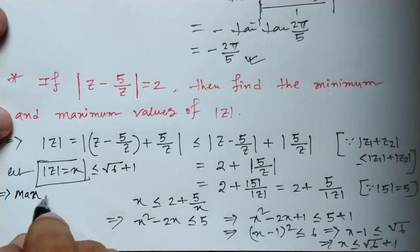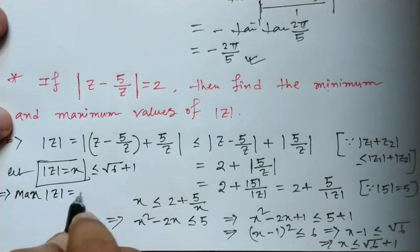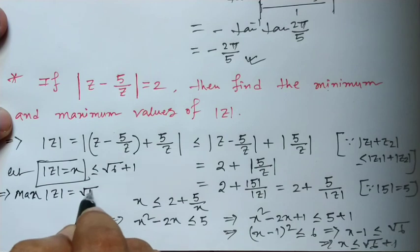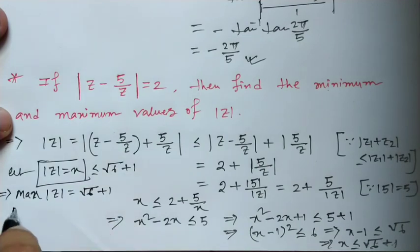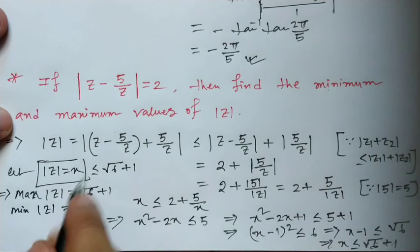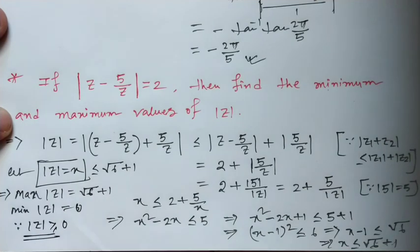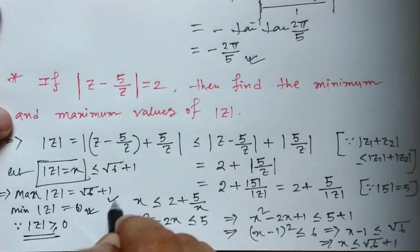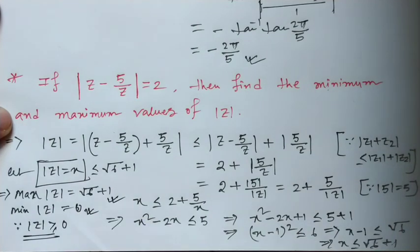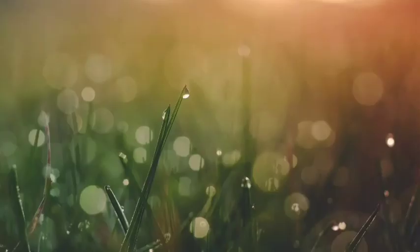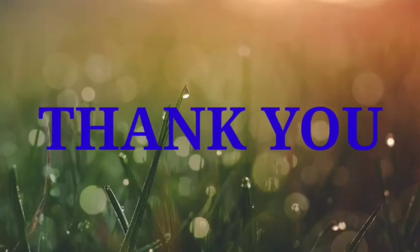Hence the maximum value of mod z equals root 6 plus 1, and the minimum value of mod z is 0, since mod z is always greater than or equal to 0. So minimum is 0 and maximum is root 6 plus 1. This was the complete solution.